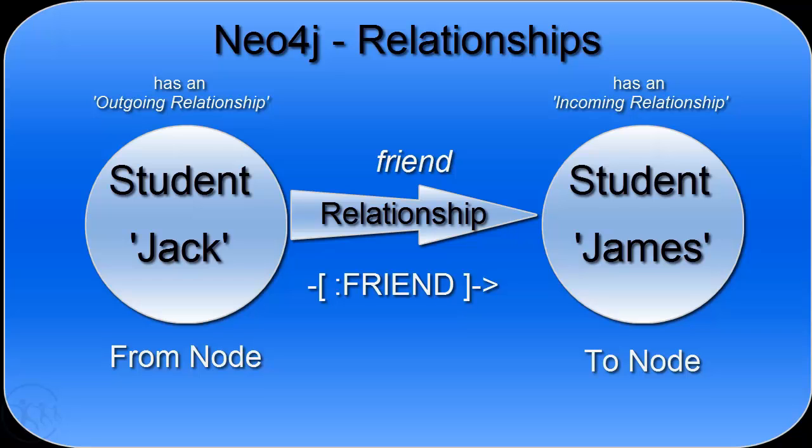With respect to nodes, there are two kinds of relationship: an outgoing relationship and an incoming relationship. This relationship on the diagram shows it's an outgoing relationship from Jack, and the same relationship is incoming to James, because it follows the direction of the arrow. This relationship is unidirectional because it only goes in one direction — the direction of the arrow.